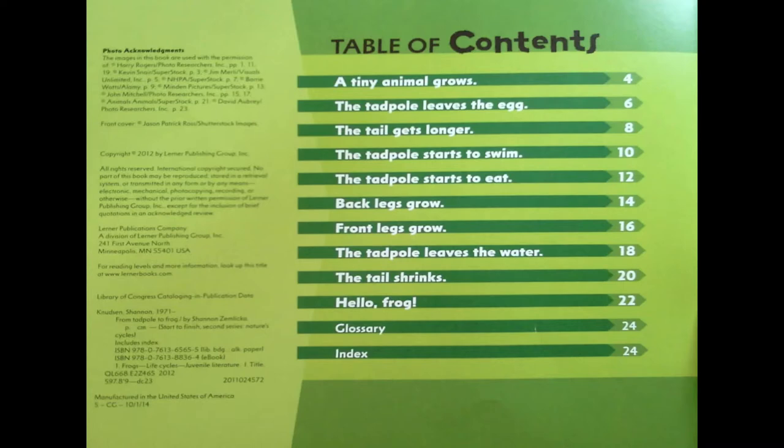Informational texts have things called text features that help us draw meaning from the text. The first major text feature we're going to be looking at is called the table of contents. The table of contents is a tool we can use when we're looking for specific information about the topic. Today we're going to read it in order, and you're going to find that each page goes along with the items in the table of contents. At the very end we're going to get to the glossary and the index, and I'll tell you what those are when we get there.